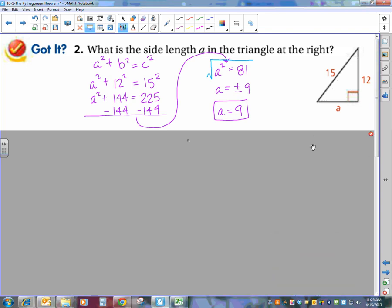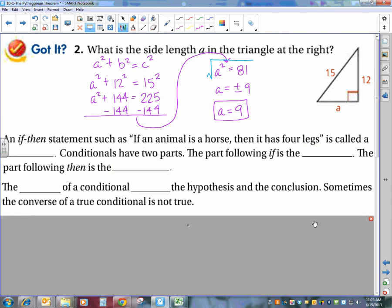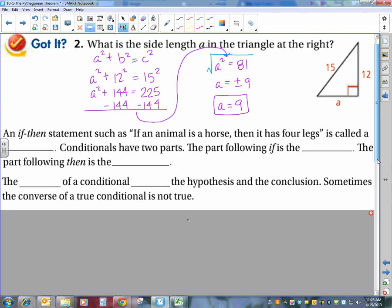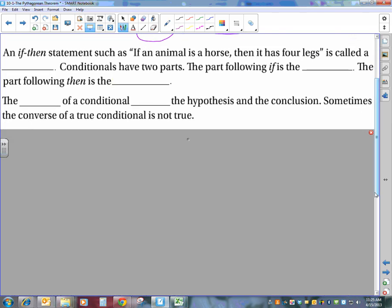The next thing that we've got to talk about are if-then statements. An if-then statement, such as if an animal is a horse, then it has four legs, is called a conditional statement. And conditionals have two parts. The part following the if-then is called the hypothesis. And the part following the then is the conclusion.